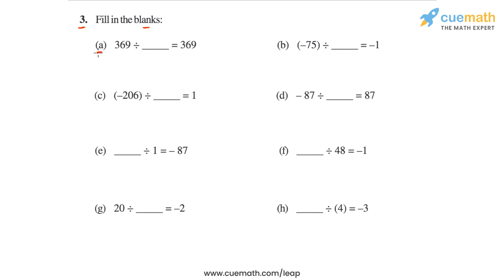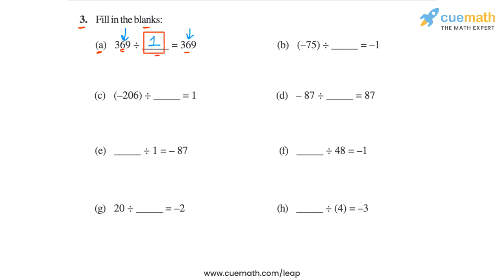In part a, we have the statement 369 divided by blank is equal to 369. So what integer will make this statement correct? This one is simple. Since the dividend and the quotient are exactly the same, the divisor must be equal to 1. So in part a, the correct answer is simply 1.